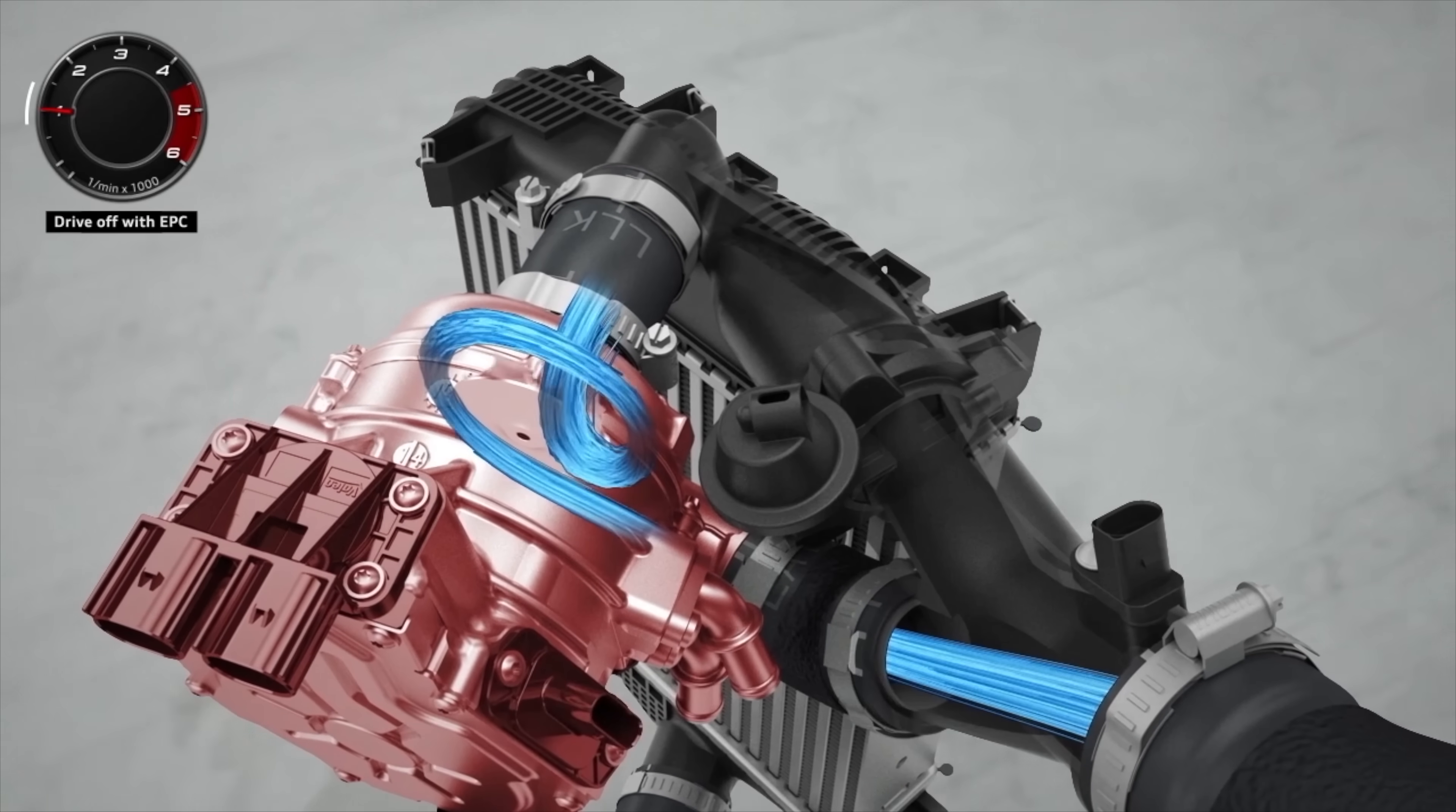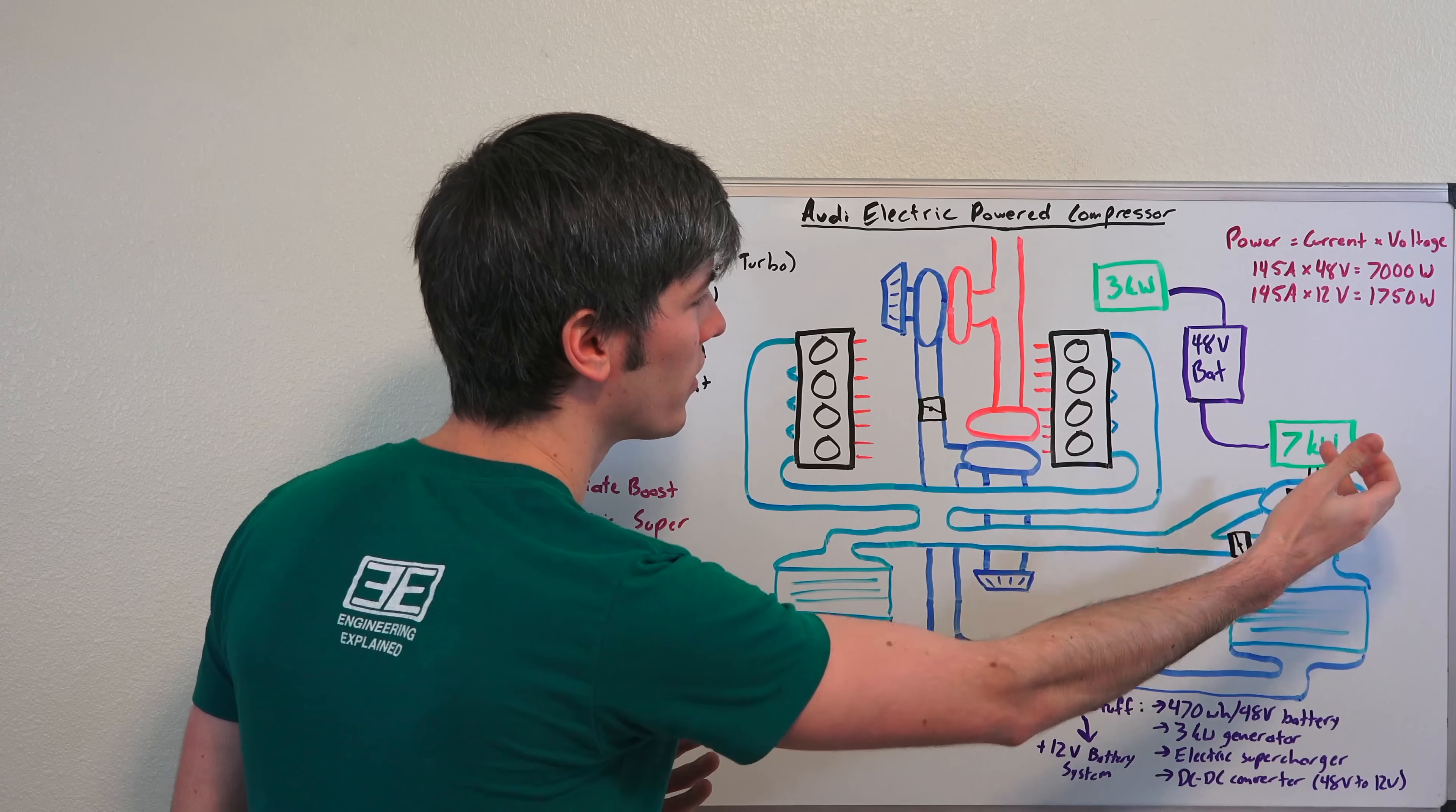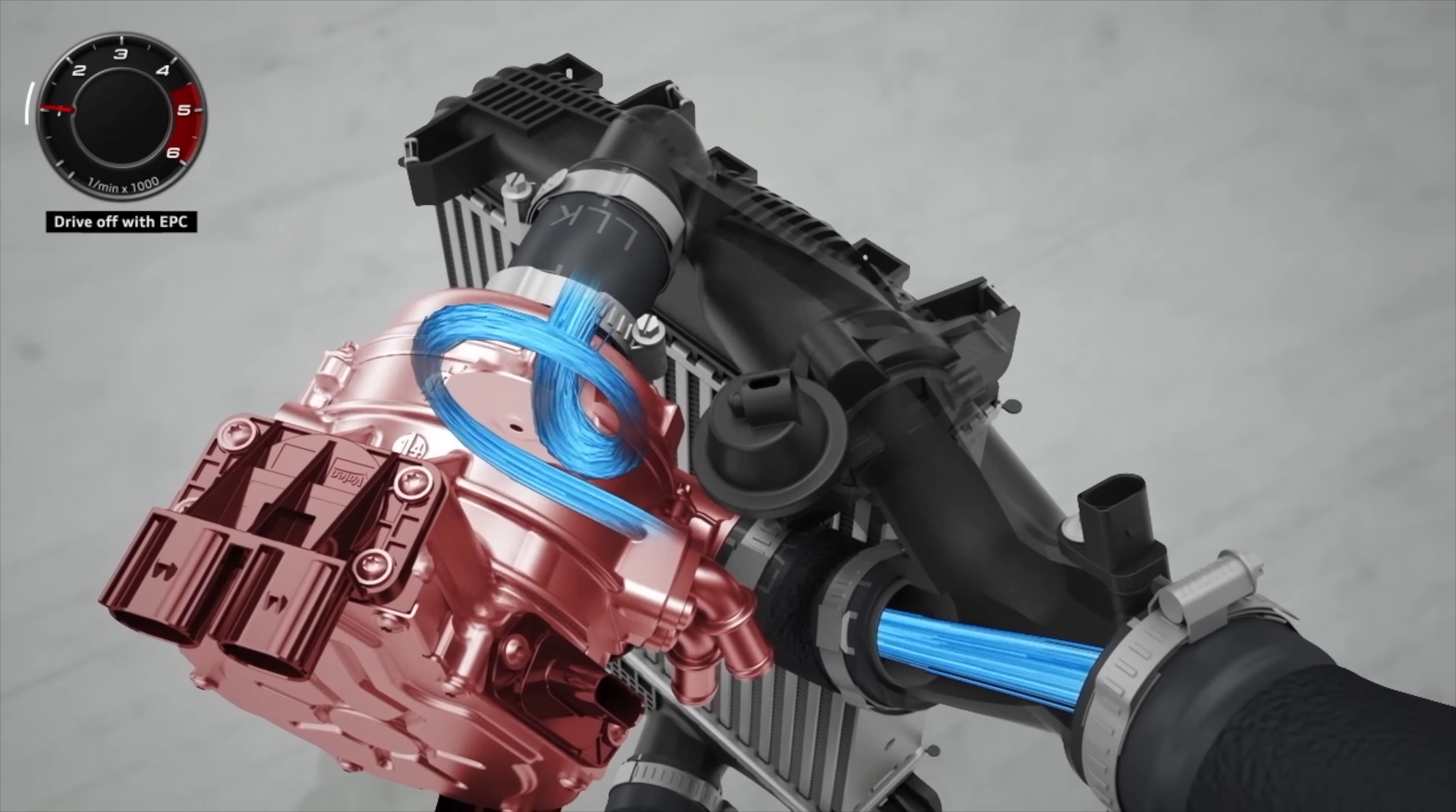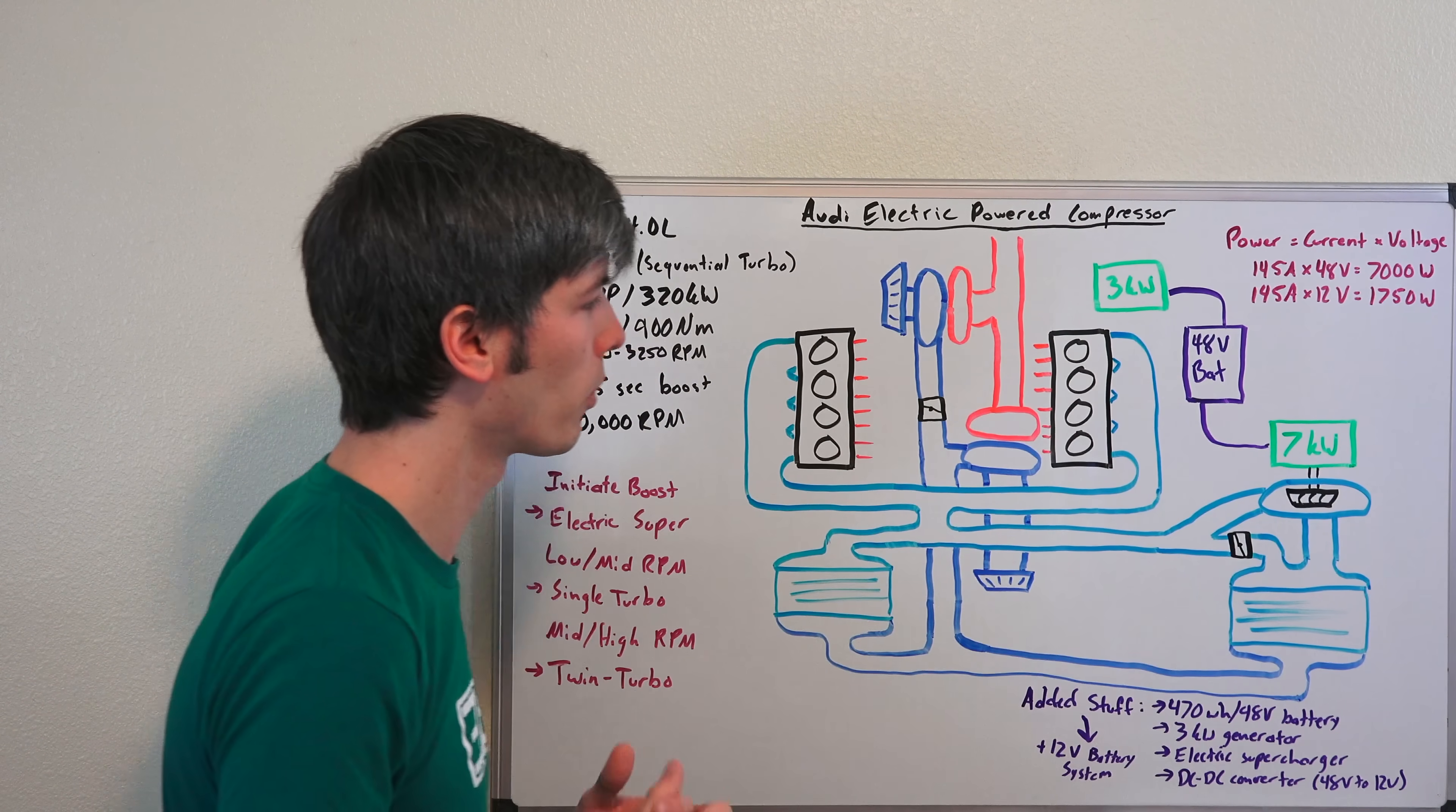So traditionally superchargers are run off of the engine. In this case the engine is powering a 3 kilowatt generator, which is powering a 48 volt battery, which is then powering a 7 kilowatt electric motor, which is powering the compressor side. That compressor pulls in additional air to compensate for turbo lag. So Audi is calling this an electric powered compressor, you can think of it as an electric supercharger, where instead of the engine driving it, you have an electric motor driving that compressor wheel.